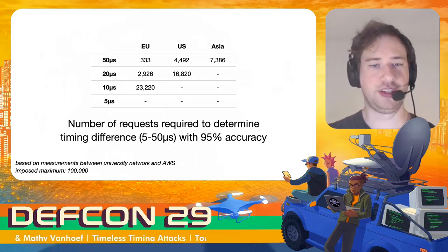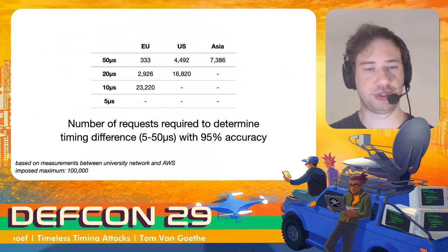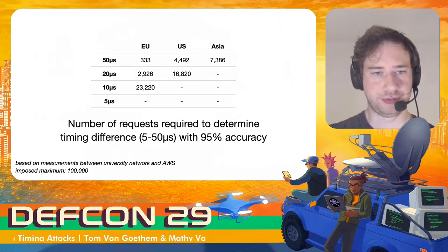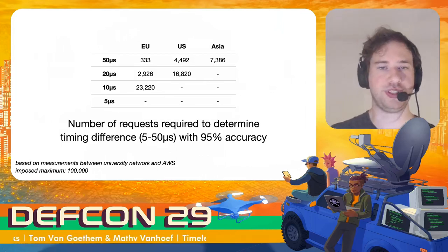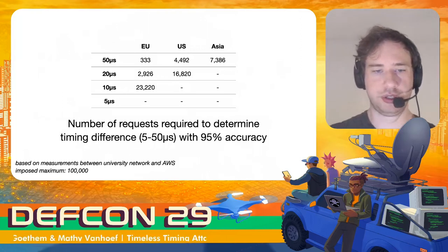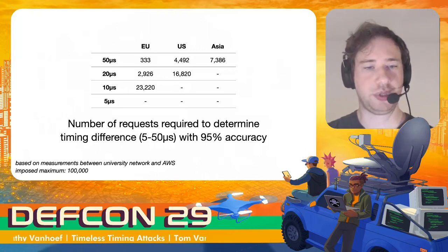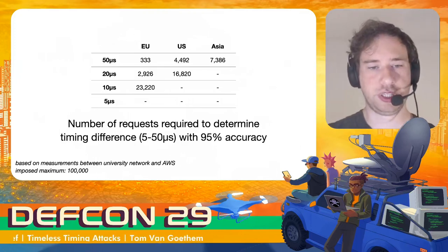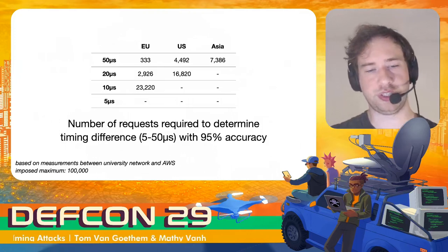As the timing difference became smaller, the attacker required more measurements. For 20 microseconds, close to 3,000 requests were needed for a server in the EU, growing to 23,000 for 10 microseconds. For a timing difference of just 5 microseconds, it was not possible even with a maximum of 100,000 requests.